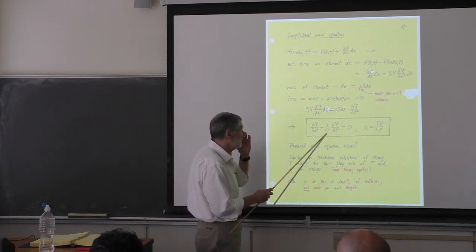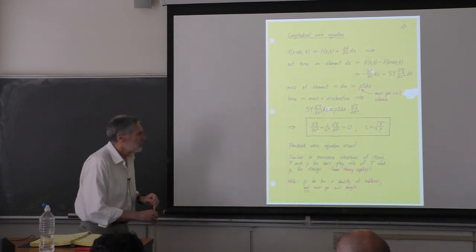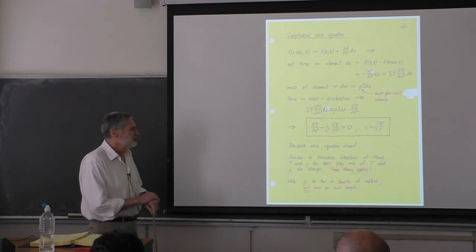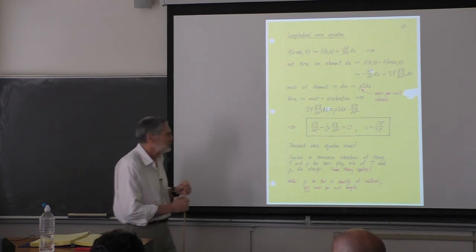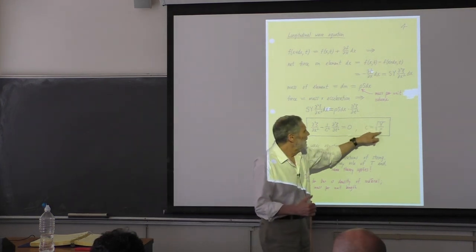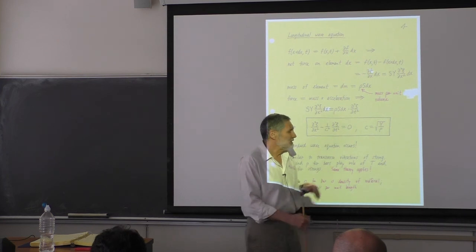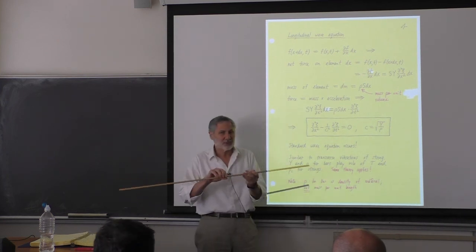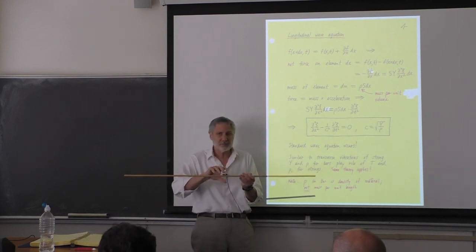We have the speed of waves, given by the square root of the Young's modulus — an elastic modulus — divided by the density. This is true when the wavelength is large compared to the diameter, so that the material can bulge.